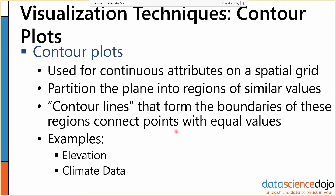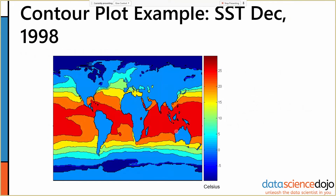Another plot that we use a lot are contour plots, which we've seen before. You can think of geographical maps here — we use contour plots for topographical maps all the time. We partition the plane into regions of similar values and color in those values, separating them with contour lines to show the differences.